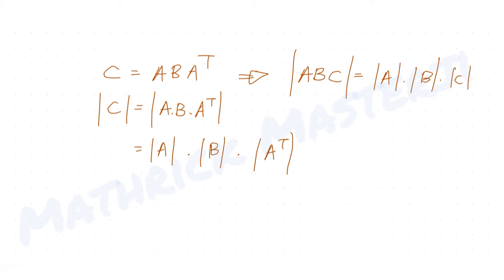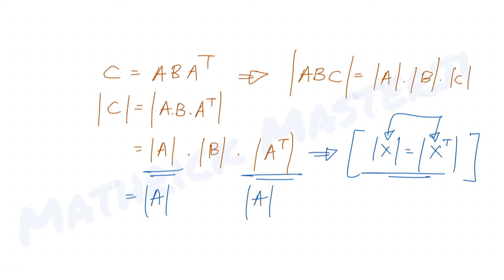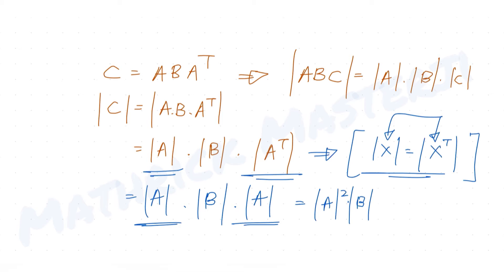We know that det(Aᵀ) = det(A) for any matrix. So det(Aᵀ) is just det(A), giving us det(A)·det(B)·det(A), which equals det(A)² · det(B). This is det(C).